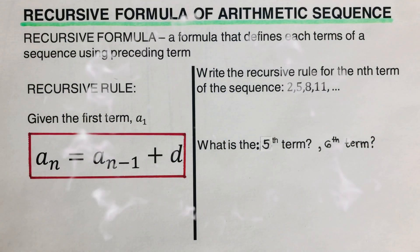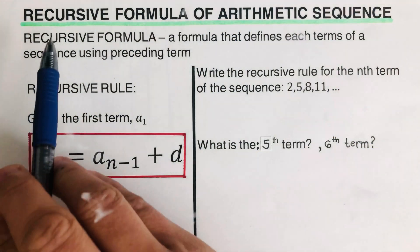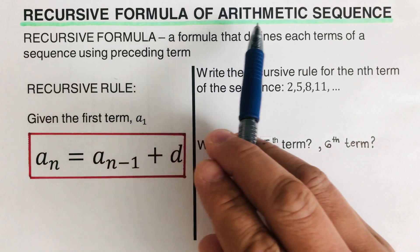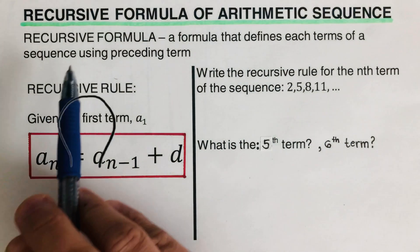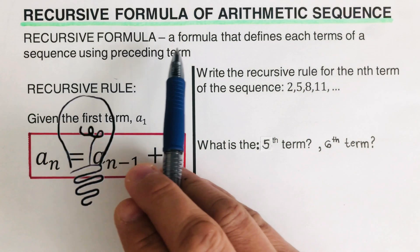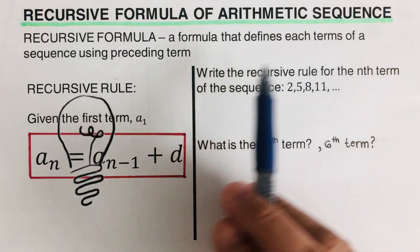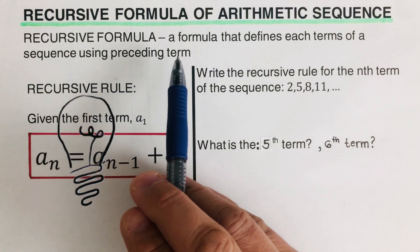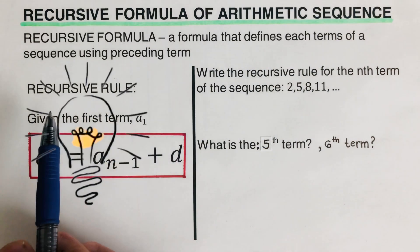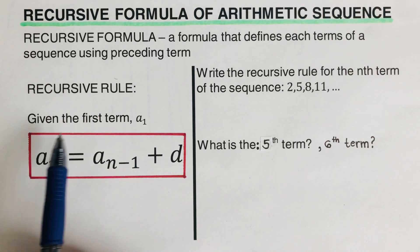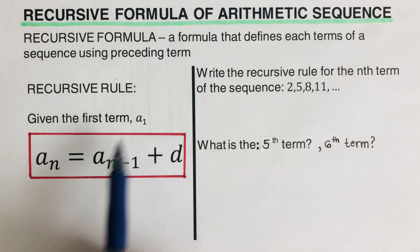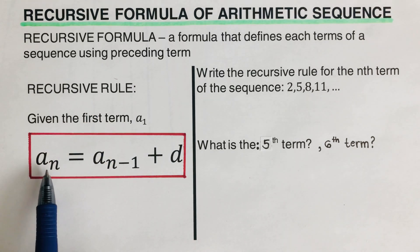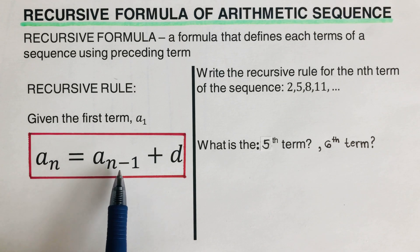Hello everyone. This video will focus on the recursive formula of arithmetic sequences. By definition, a recursive formula is a formula that defines each term of a sequence using the preceding term. This is the recursive rule: given the first term, represented as a sub 1, a sub n is equal to a sub n minus 1 plus d.